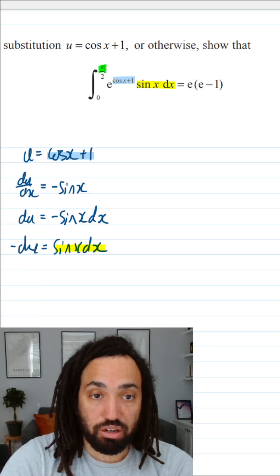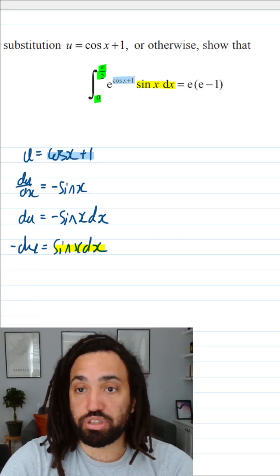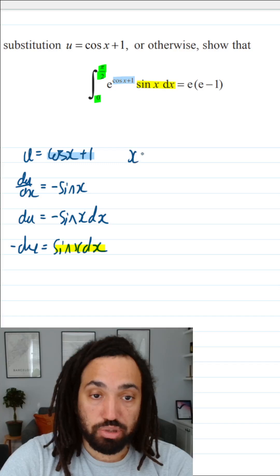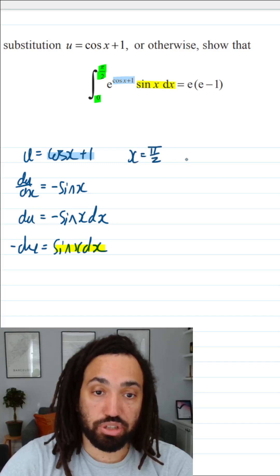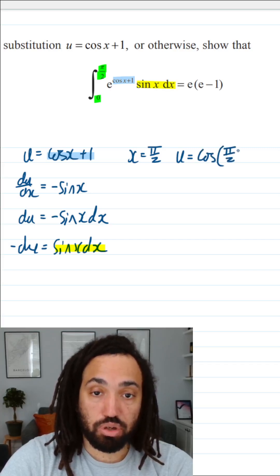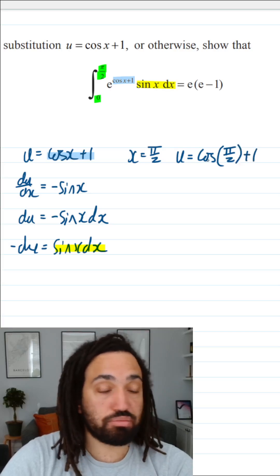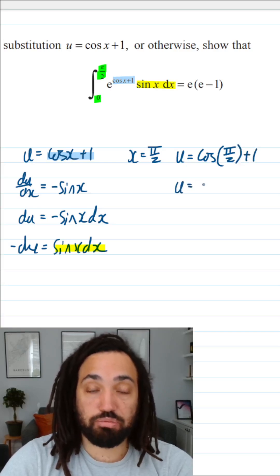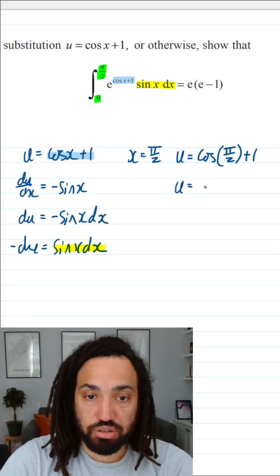So all that's left to swap out are the limits of pi over 2 and 0. We're going to say x equals pi over 2, so that means u equals cos x plus 1, so cos of pi over 2 plus 1. The cos of pi over 2 is 0, so 0 plus 1 is 1.